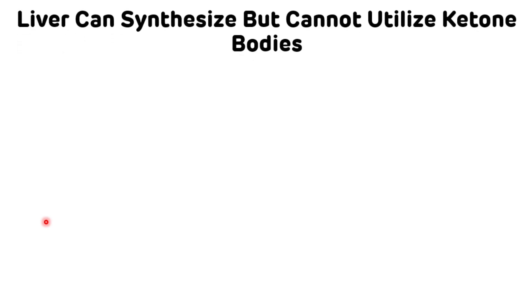Hello everyone. Today we are going to discuss an important justification question: the liver can synthesize but it cannot utilize ketone bodies. Examples of ketone bodies are acetone, acetoacetate, and beta-hydroxybutyrate. These ketone bodies are synthesized in the body during uncontrolled diabetes mellitus and starvation.